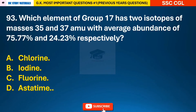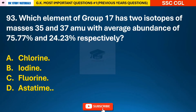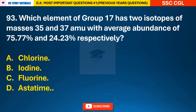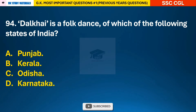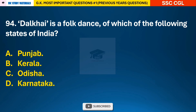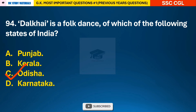Question 93: Which element of group 17 has two isotopes of masses 35 and 37 amu with average abundance of 75.77% and 24.23% respectively? — answer A: chlorine. Question 94: Dalkhai is a folk dance of which of the following states of India? — answer C: Dalkhai is a folk dance of Odisha.